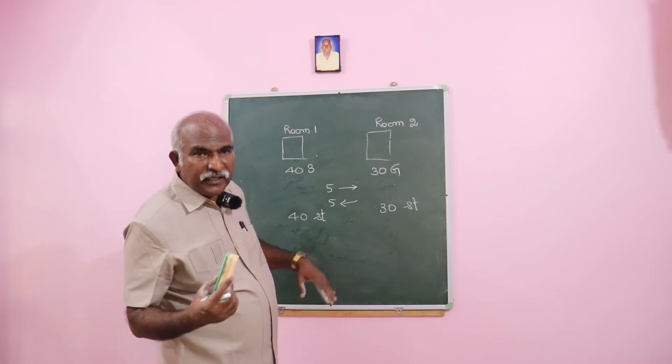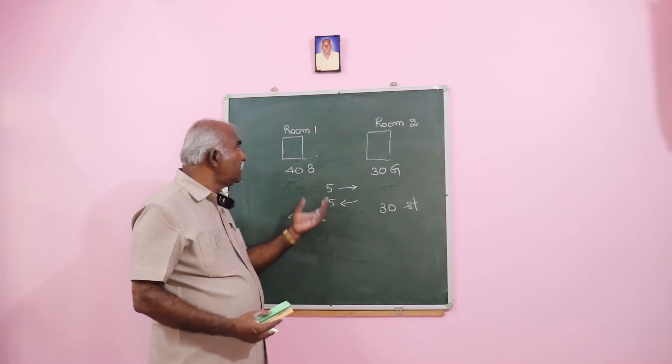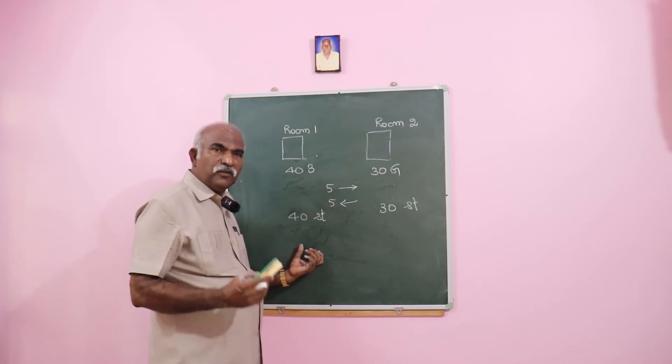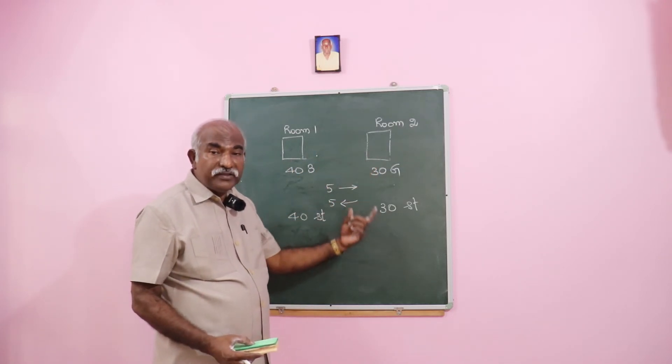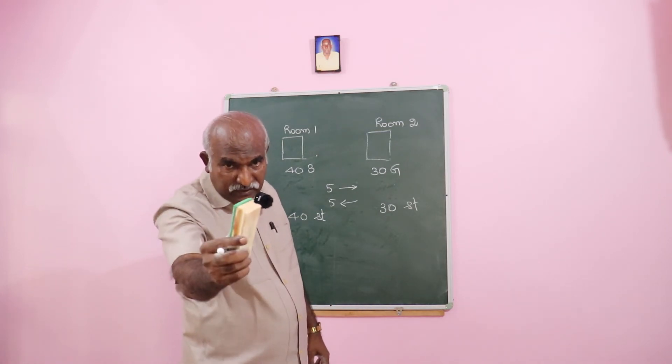So by the principle of replacement, the number of girls in room one will be the same as the number of boys in room two. Think differently.